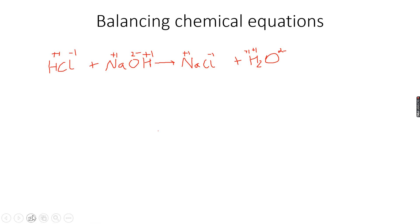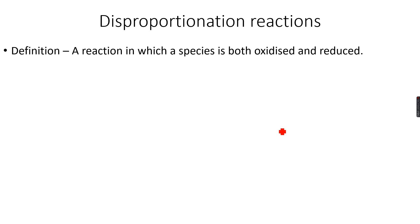So you should be very clear about things like these. Now, disproportionation reactions are reactions where a species is both oxidized and reduced. So a very typical example for a disproportionation reaction is Cl2 plus H2O giving us HCl plus HClO.